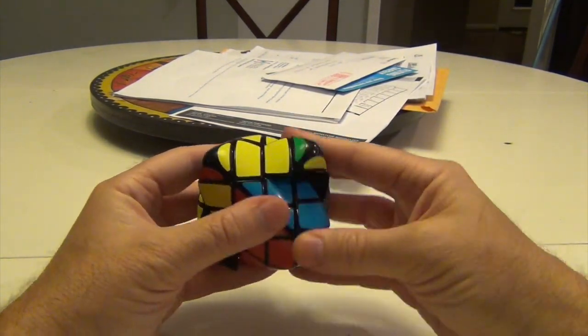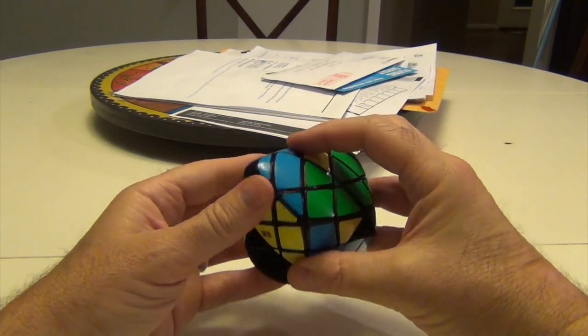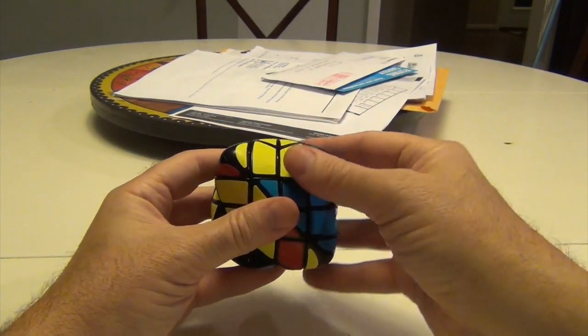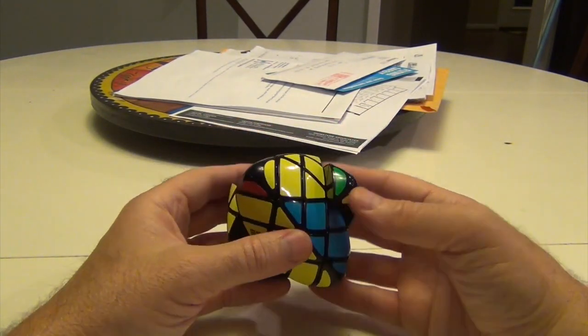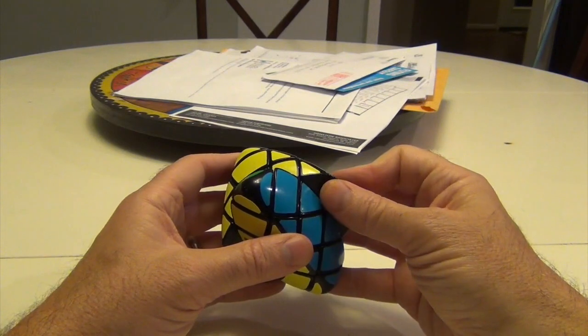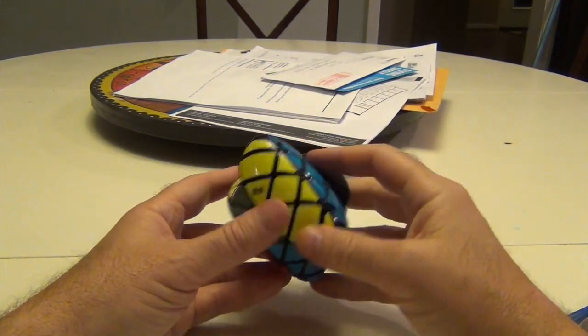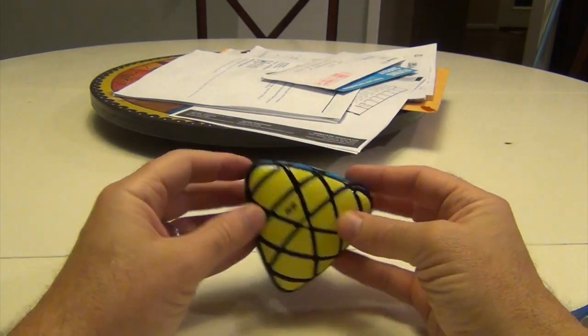So we're going to do L-inverse, U-inverse, R, U, L, U-inverse, R. So you don't have to memorize any difference there. We're just sort of swapping algorithms. And then we simply move this back. This has now been placed where it needs to be. Put this over here, and it's done.